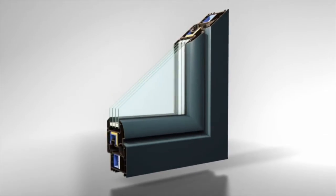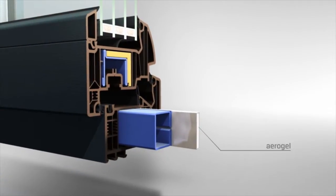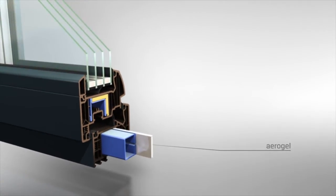Wienergetik Premium Passive is the first PVC window in the world with space technology, a window in which aerogel, a material with the best thermal properties in the world, has been applied for the first time.